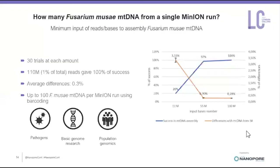Once the mitochondrial DNA was assembled, the last step was to investigate the minimum amount of bases needed to appropriately detect mitochondrial DNA. We tried the assembly using different percentages of reads. The results showed that the minimum amount of bases leading to 100% success in mitochondrial DNA assembly was 110 megabases — corresponding to 1% of total reads and 16× coverage. These results suggest the possibility to assemble approximately 100 mitochondrial DNAs with similar sizes using a barcoding kit with a single MinION run, opening new applications for MinION in fungal population studies.